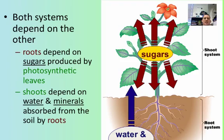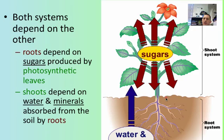Both of these systems work together — the shoot system and root system both depend upon each other. The leaves are where all the photosynthesis takes place, so the roots depend upon the leaves to transport down all the sugar. In turn, the leaves depend upon the roots to transport all the water and minerals up to the shoot system. Without one, the plant doesn't do what it's supposed to do very well. This has been Coach Eichel. If you have any questions, please feel free to email me or any of your teachers. Have a great day and bye.